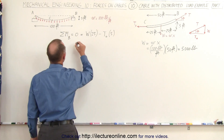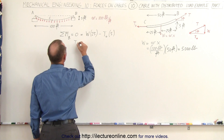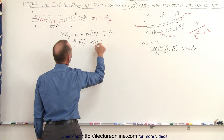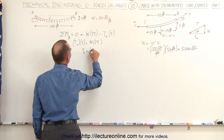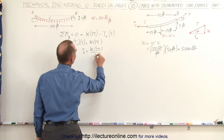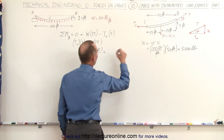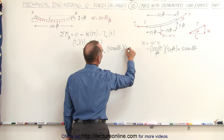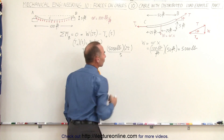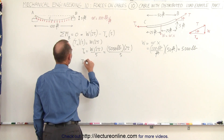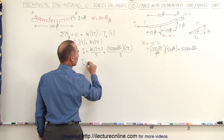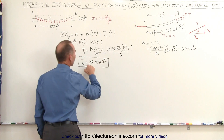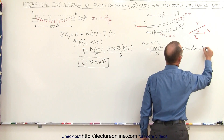The sag distance is 5 feet, so the moment equation becomes: T-sub-zero times 5 equals W times 25. Therefore T-sub-zero equals the load times 25 divided by 5. With a load of 5,000 pounds, that gives T-sub-zero equals 5,000 times 5, or T-sub-zero equals 25,000 pounds.